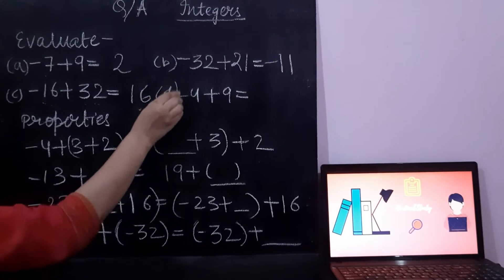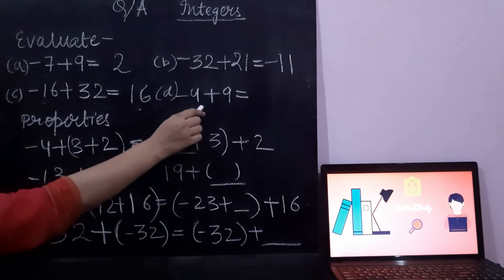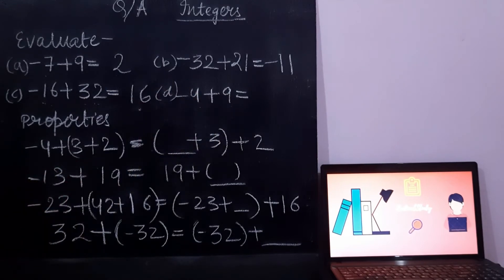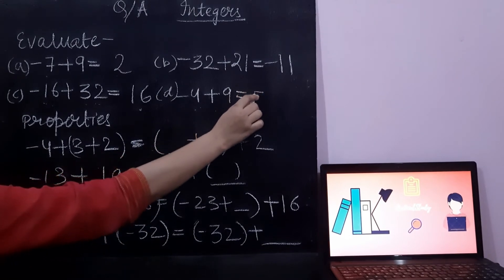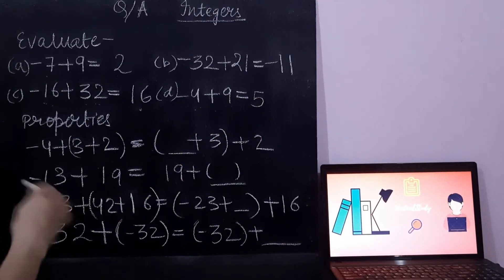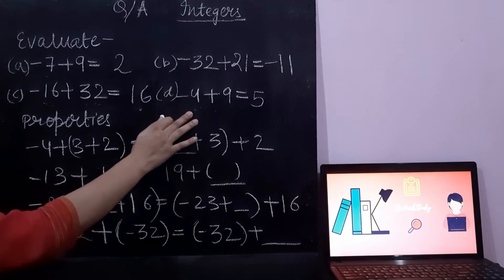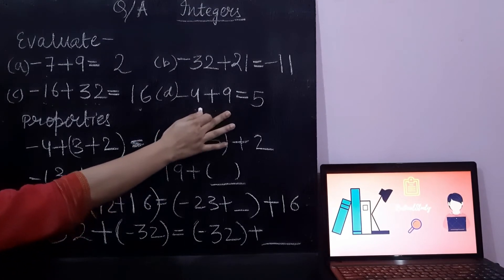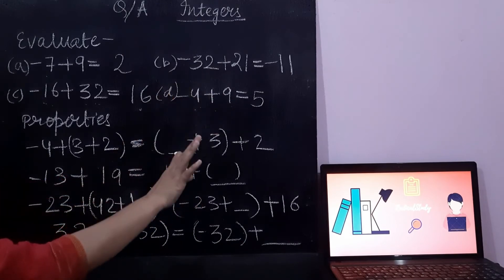Now option D: minus 4 plus 9 is equal to 5. Why is it 5 and not minus 5? Because 9 is greater than 4 and it has a positive sign, so we are giving the sign of the greater number to the result.